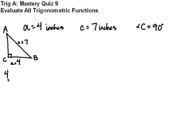A squared plus B squared equals C squared. This makes 16. Subtract 16 from both sides, and B is going to be the square root of 33.